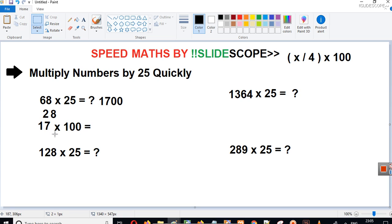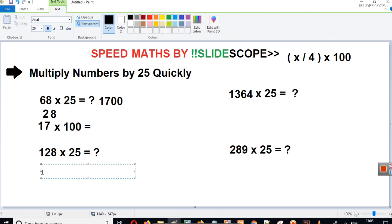If you can divide numbers by 4 quickly, then it will be really easy for you. Let's take another example here. This is 128 into 25. This is a 3 digit number. This example is really easy. We have to divide 128 by 4. So we have 12 here. Simply 4 into 3 is 12.